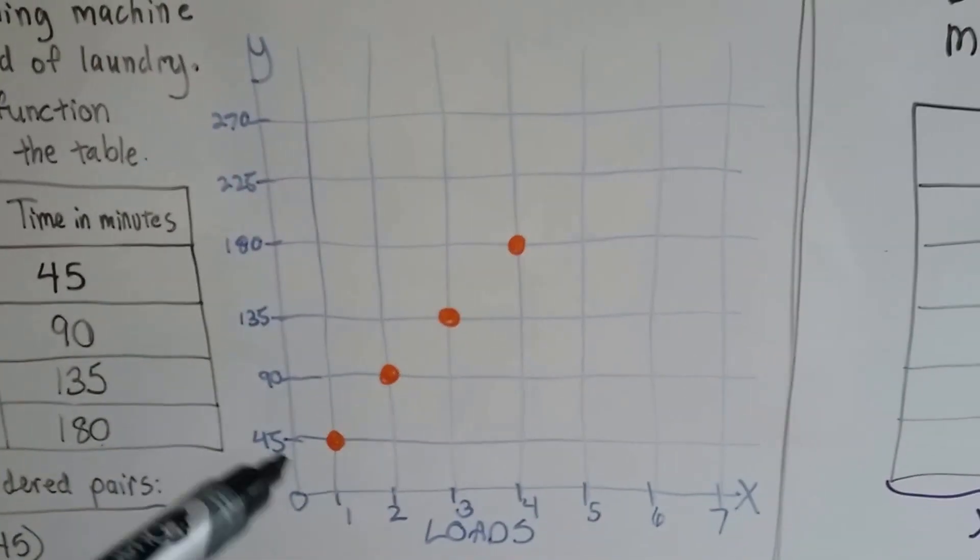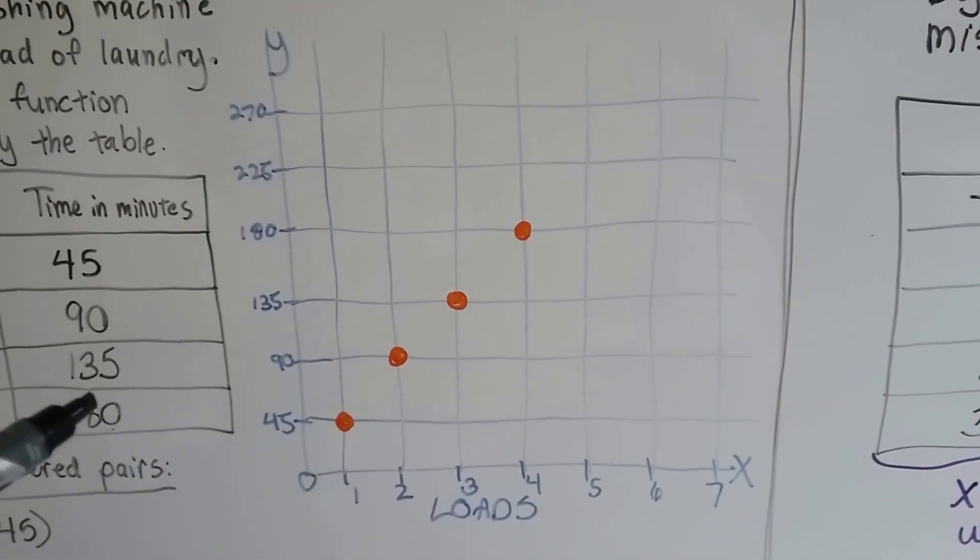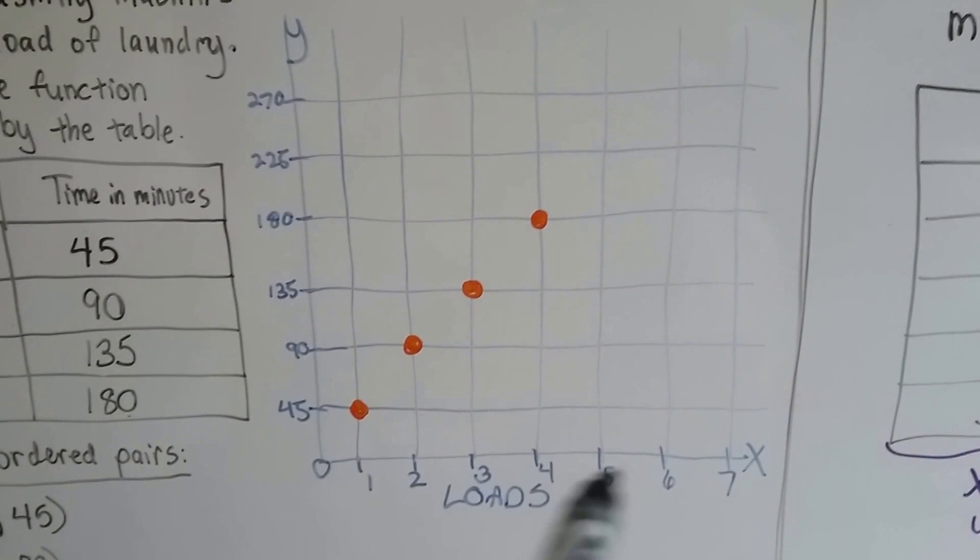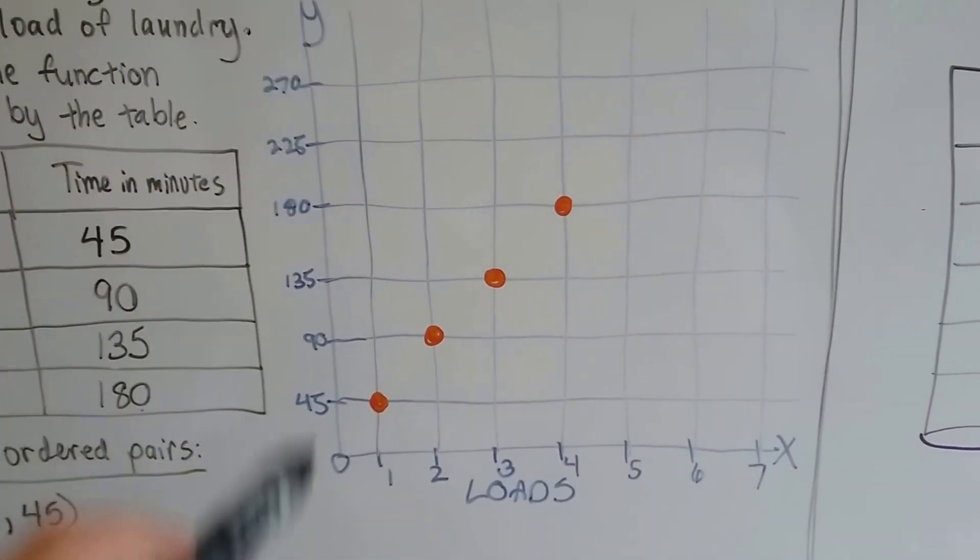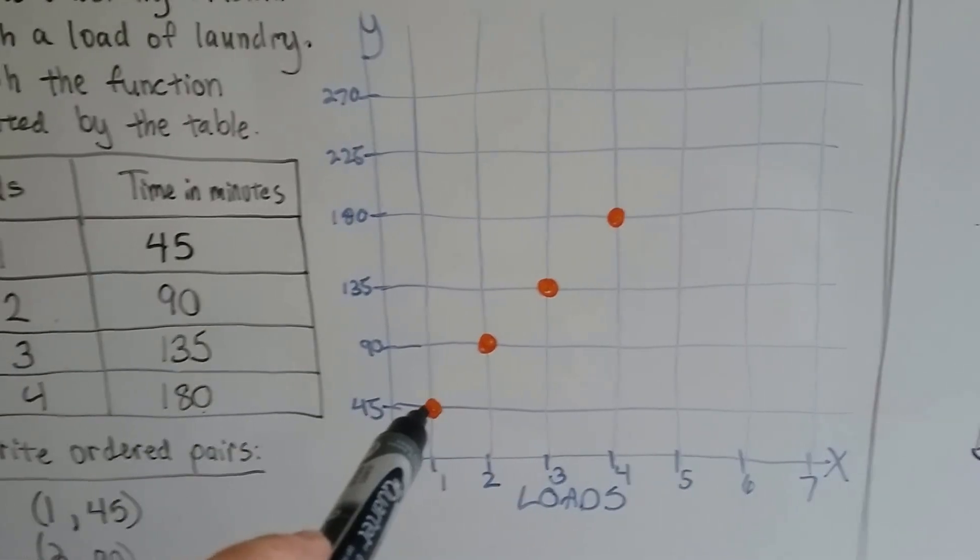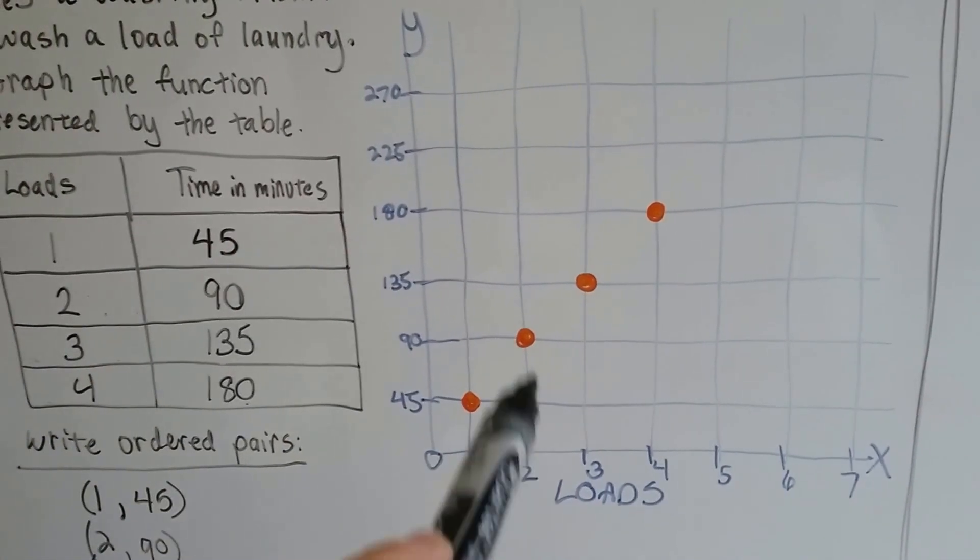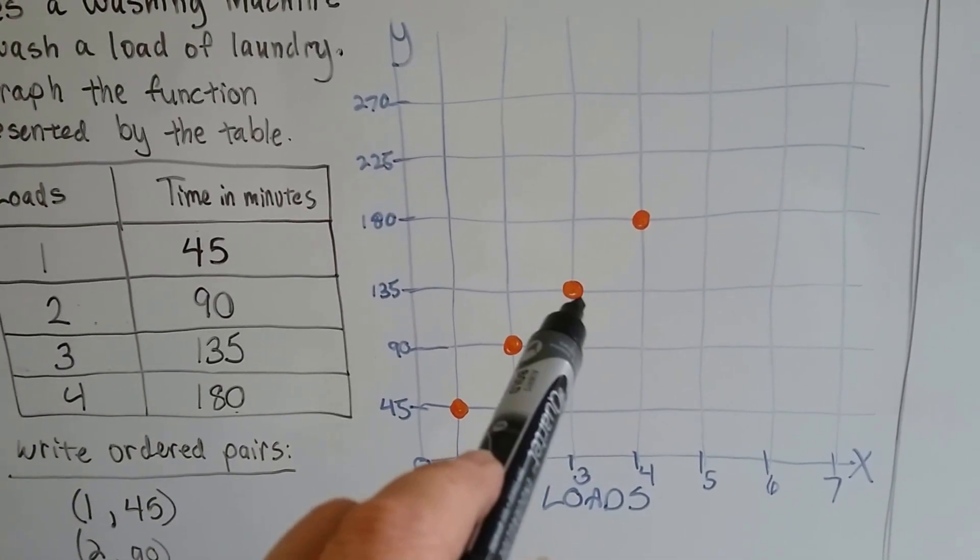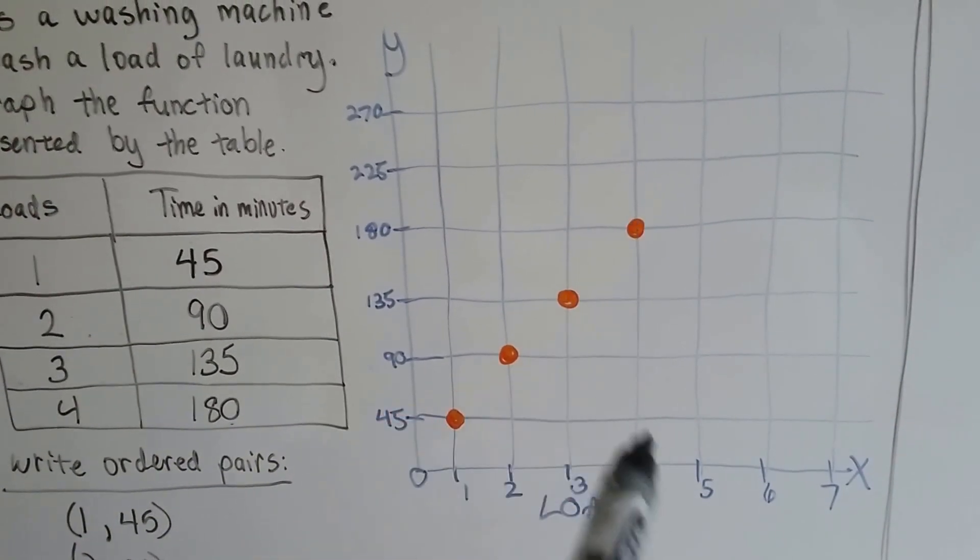So here's our chart, our table, our graph. Here's our loads of laundry, and here's our time in minutes. 1 load is 45 minutes. 2 is 90, 3 is 135, 4 is 180.